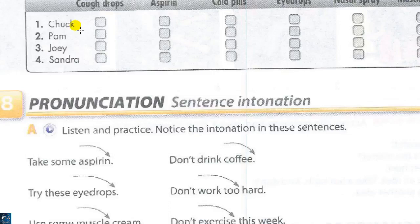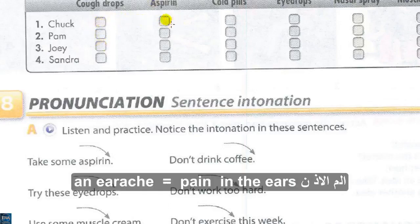One. How are you feeling today, Chuck? Not so great. I have a really bad earache. Let's take a look. I'm going to give you some aspirin. Okay. Anything else? Yes. Don't go swimming for a week. Chuck has an earache — pain in his ears. The doctor tells him to take some aspirin, and he shouldn't swim.